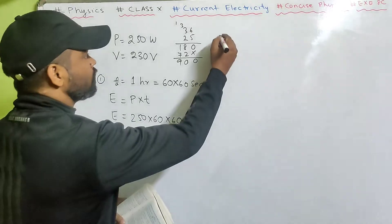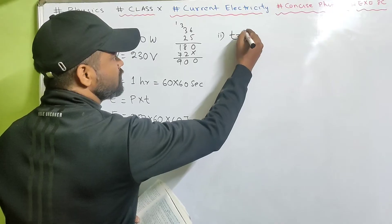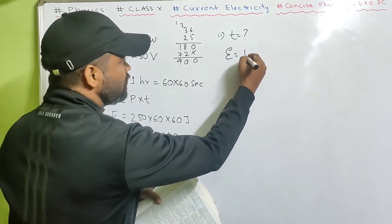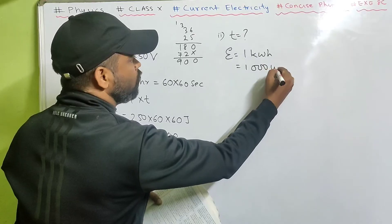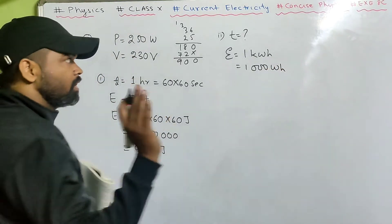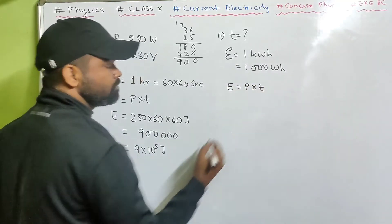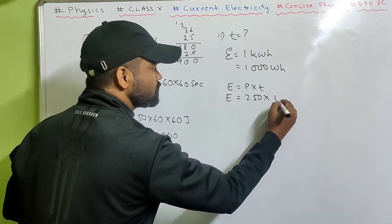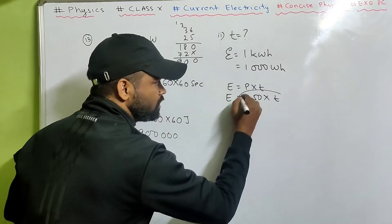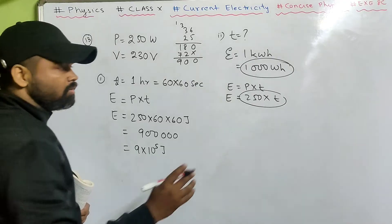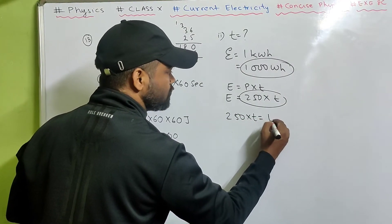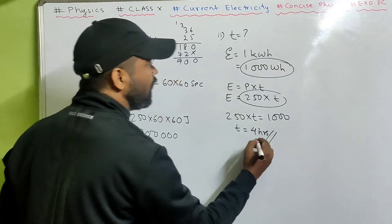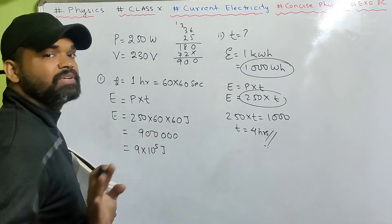For part two: the bulb consumes 1 kilowatt hour energy. 1 kilowatt hour equals 1000 watt hour. Using E equals P into T, with T in hours: 250 into T equals 1000. So T equals 4 hours. In 4 hours, this much energy is consumed.